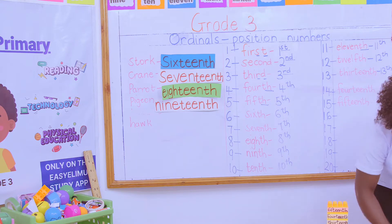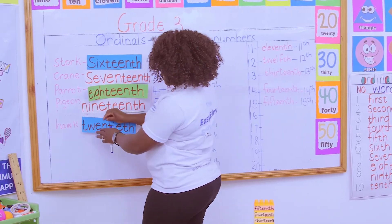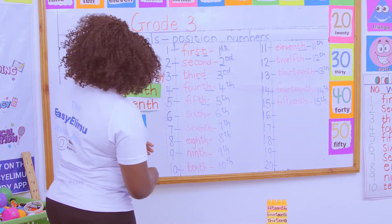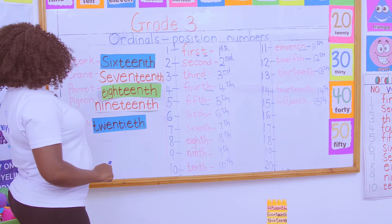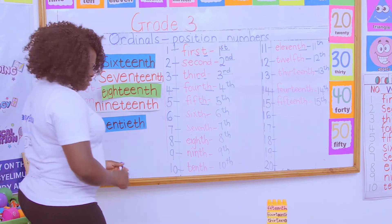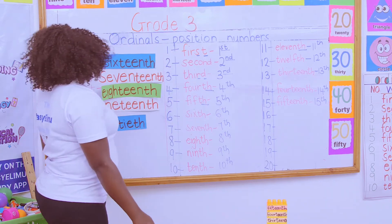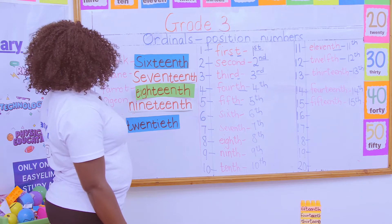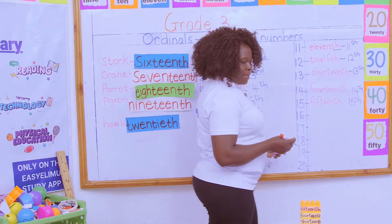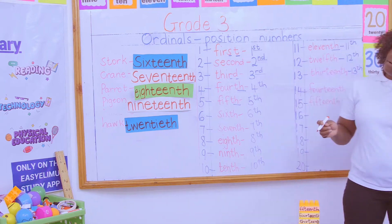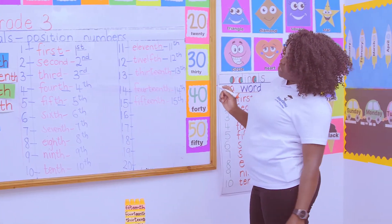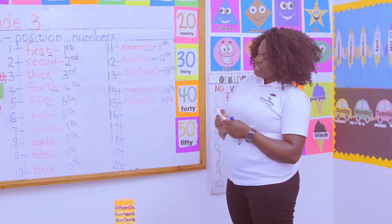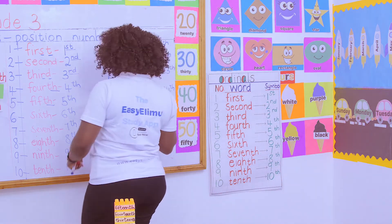So if you are told — which bird appeared in the 20th position? It was the hawk. Which bird was in the 18th position? It was the parrot. Now, the stork appeared in which position? The stork appeared in the 16th position. Johnny, tell us — the crane appeared in which position? The crane appeared in the 17th position.